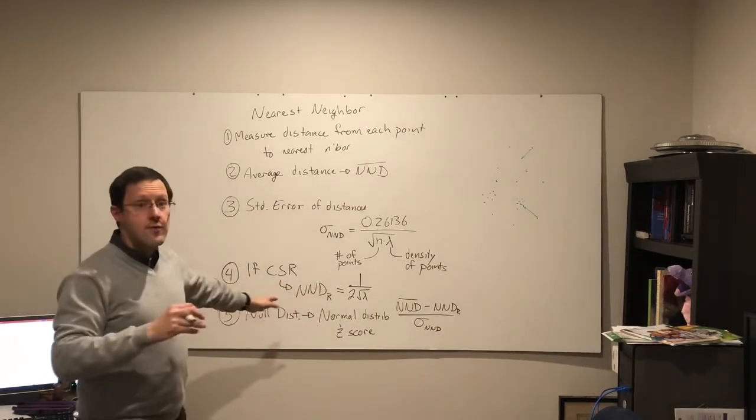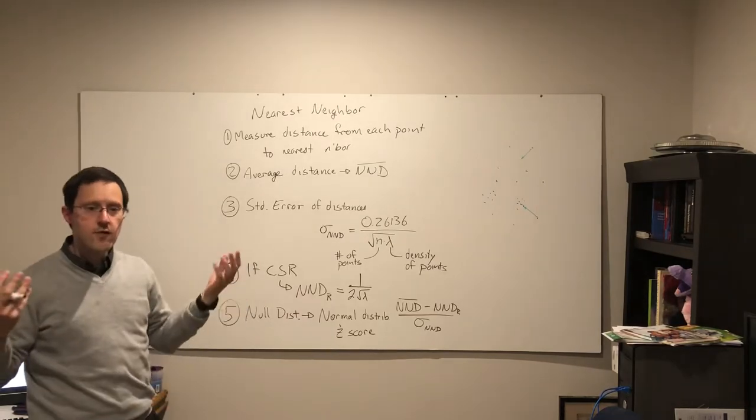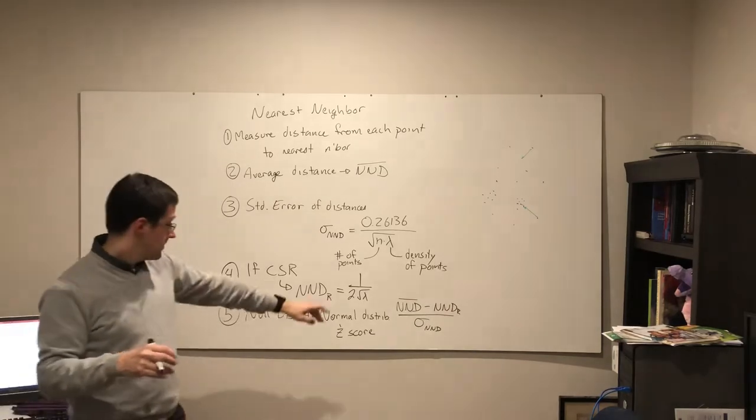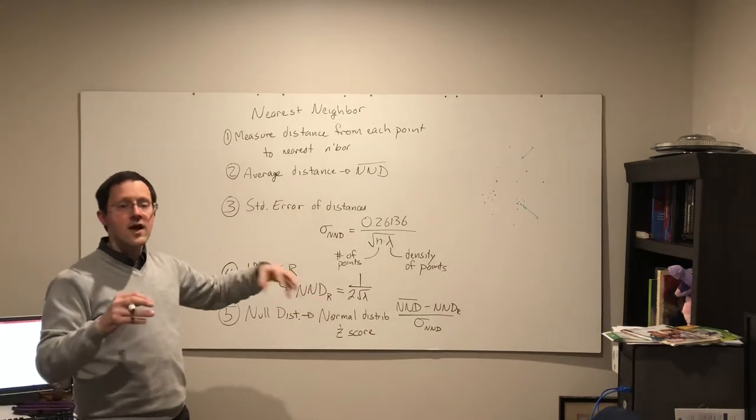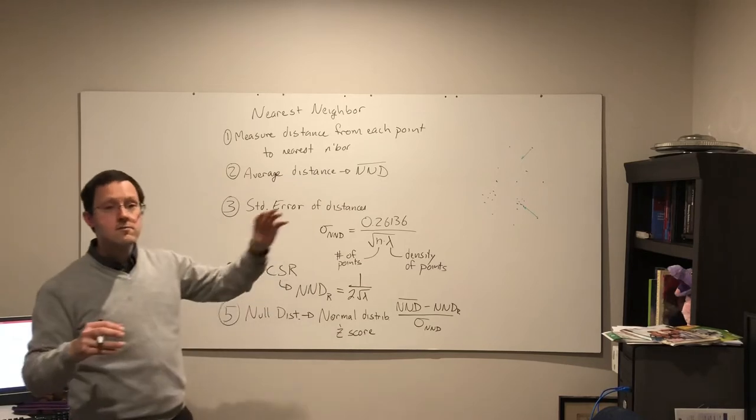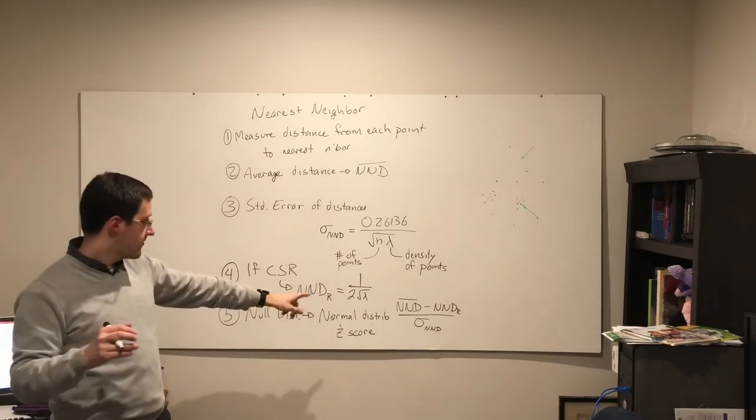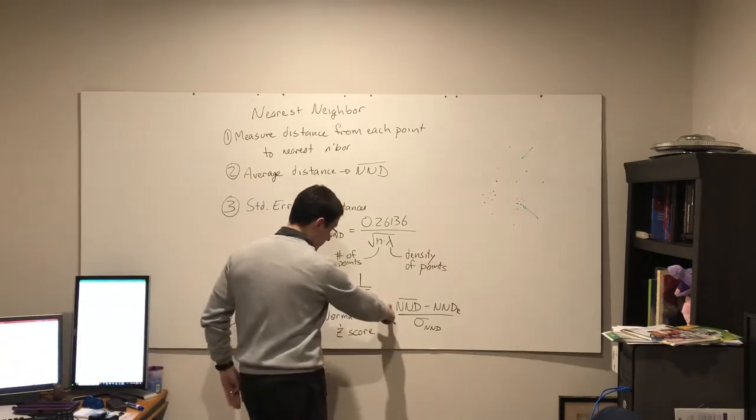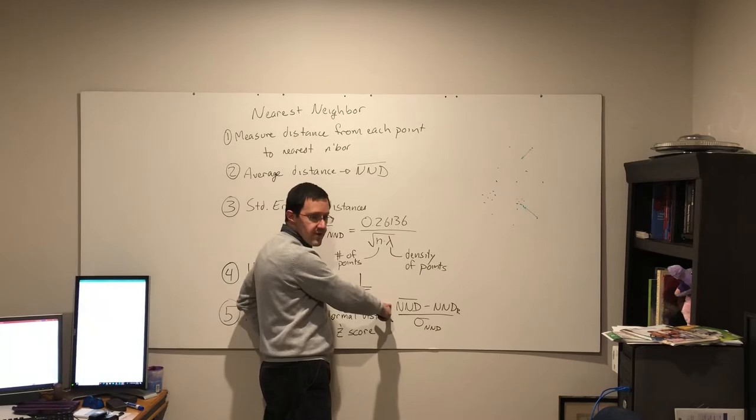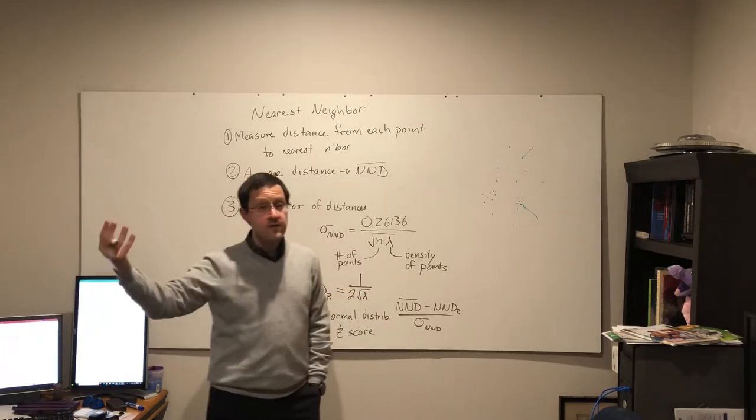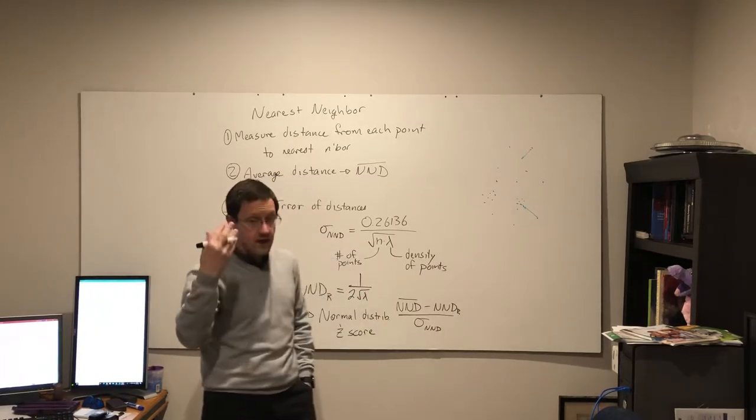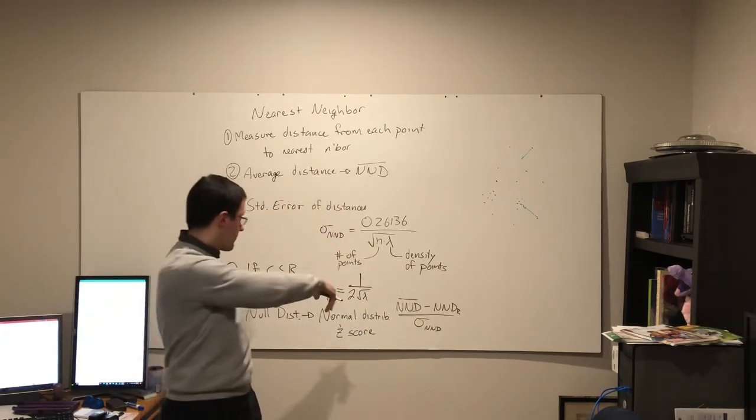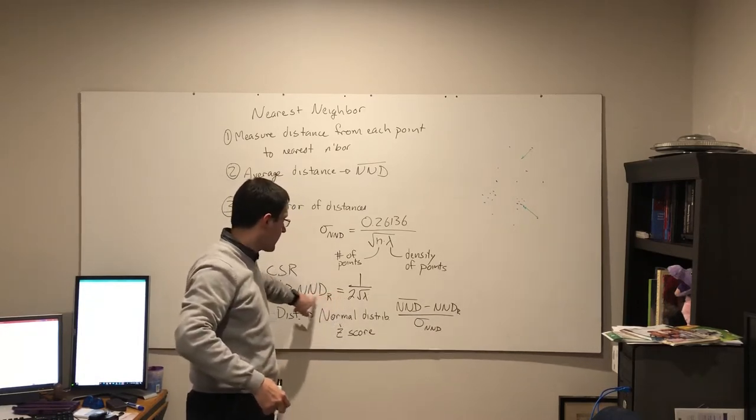So if you remember the z-test to see if a particular observation was unusual given a distribution, this in a way would look very similar. An observation minus the average divided by the standard error or standard deviation.